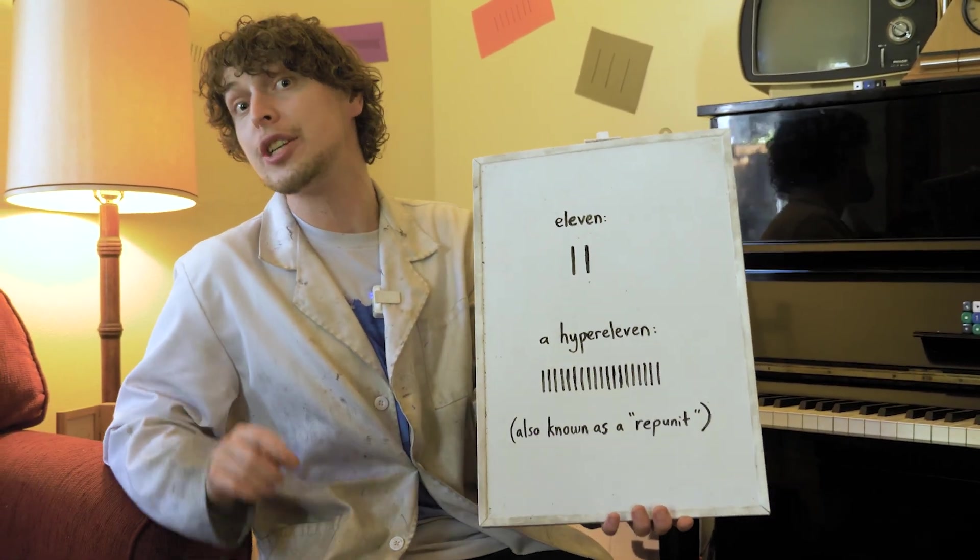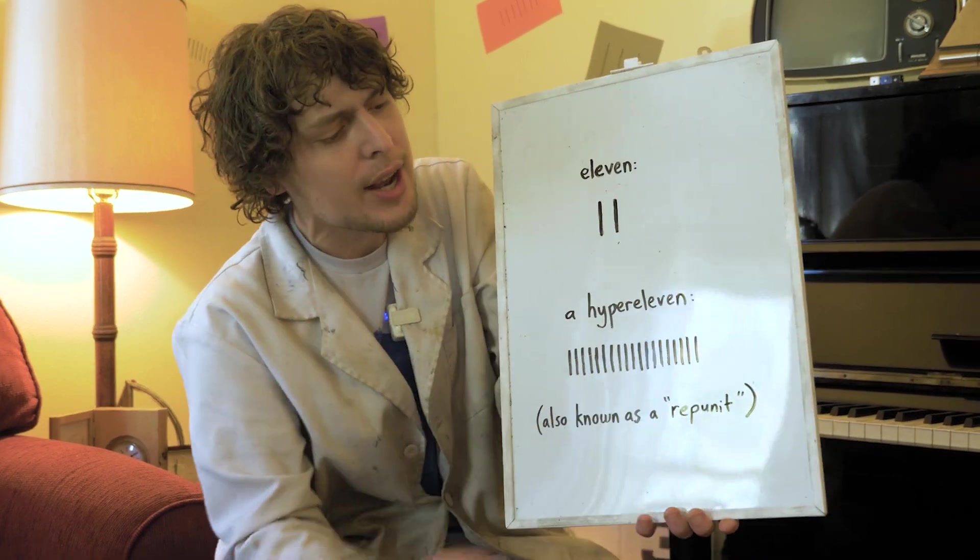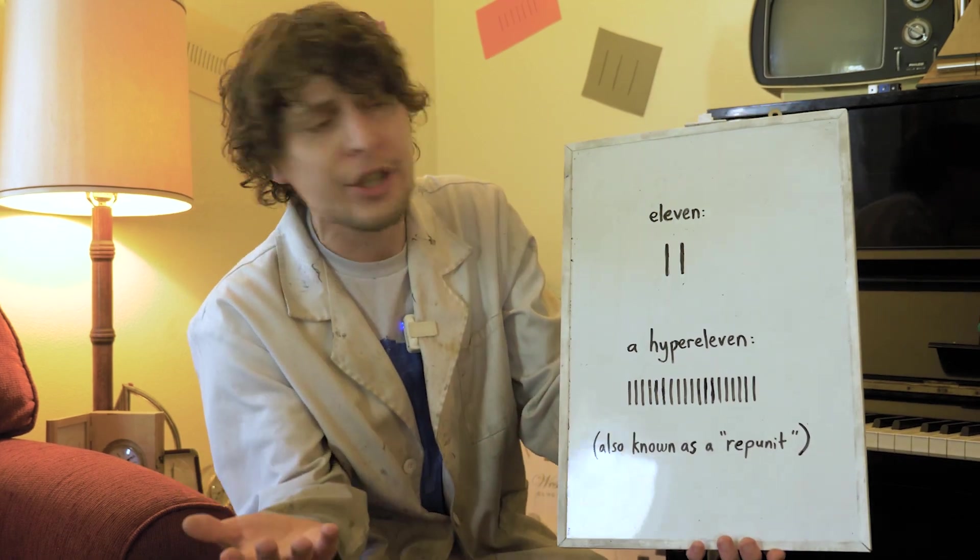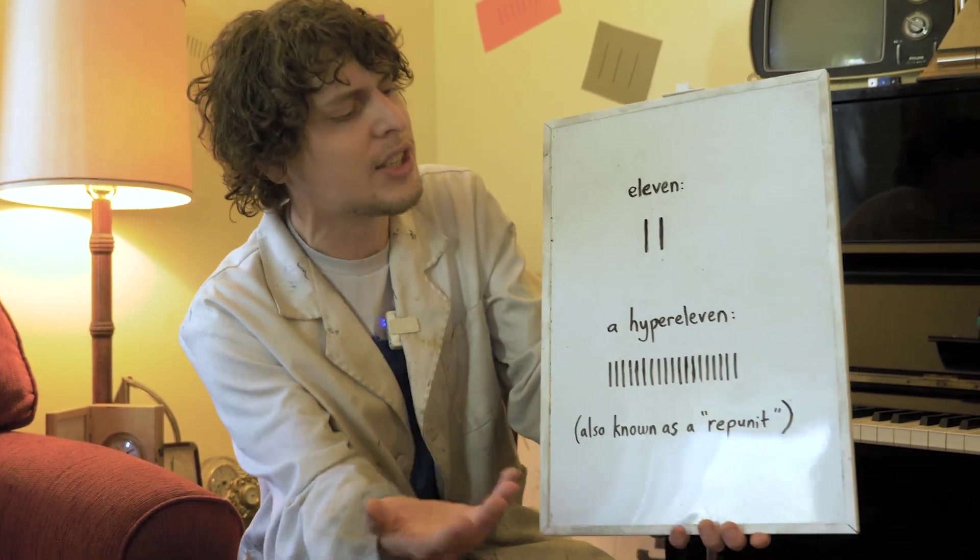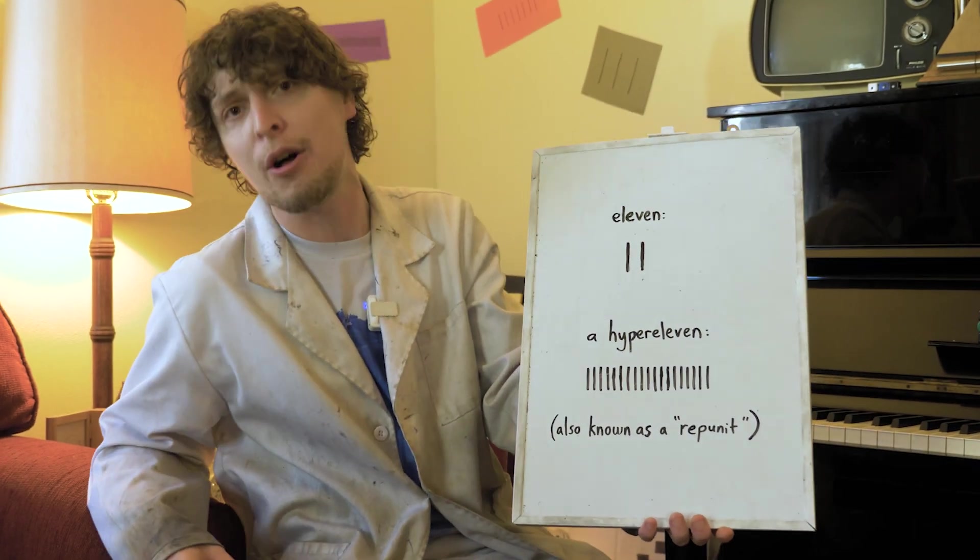Numbers composed of just the digit one. Technically these are known as rep units these days for repeated unit, but they used to be known as monodigits. That got coined in the 60s and I like the nickname hyper 11, so that's what I'm going to call them today.